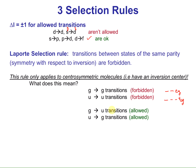Tetrahedral complexes don't have an inversion center, so we don't have to worry about the Laporte rule. In the splitting diagram for a tetrahedral complex, the labels are T2 on top and E at the bottom — they don't have G and U assignments because there's no inversion center. This is why tetrahedral complexes are usually darker than octahedral complexes — you don't have to worry about breaking the Laporte selection rule because it doesn't apply.